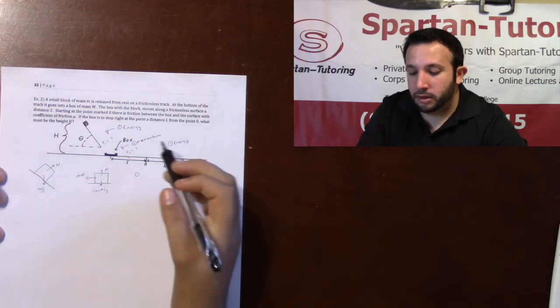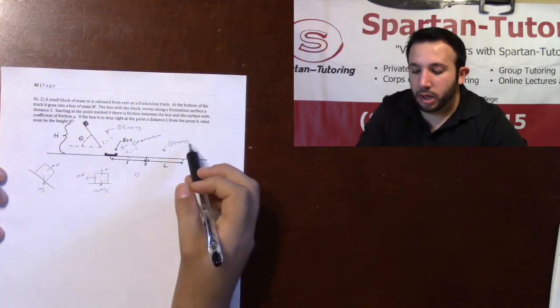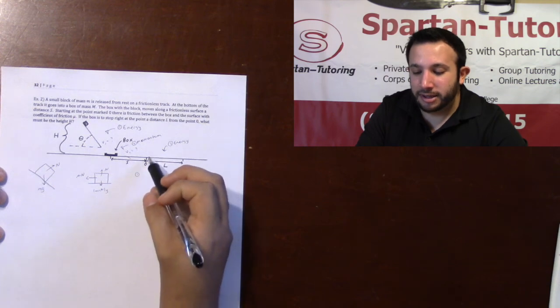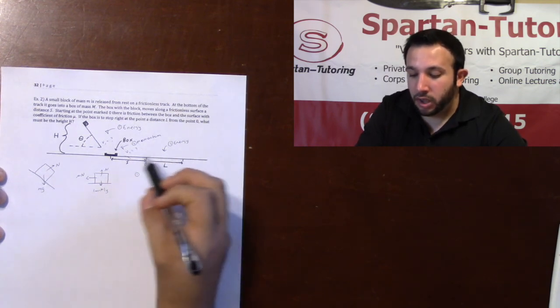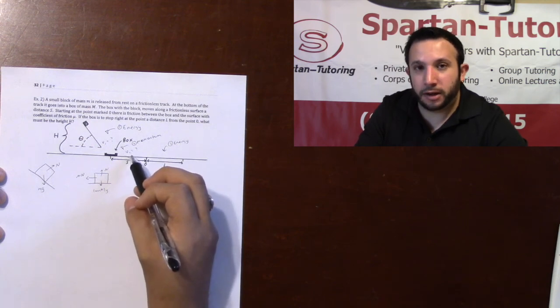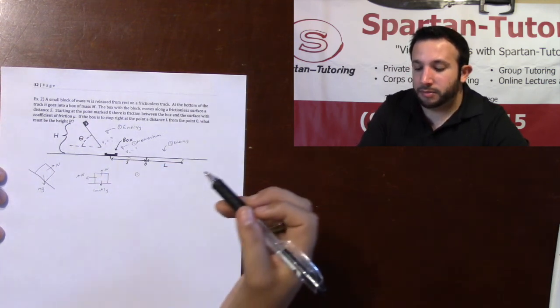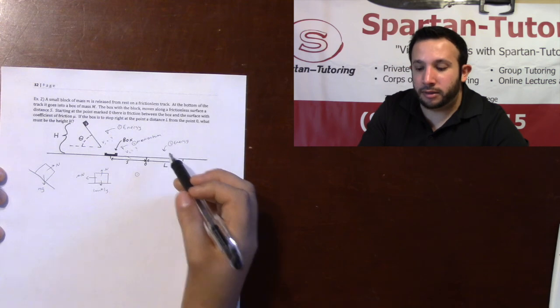Finally, once we have that V2, I'm going to use conservation of energy once again to calculate all the work loss or the energy loss due to friction, where now this V2, the final velocity of momentum becomes the initial velocity of energy.